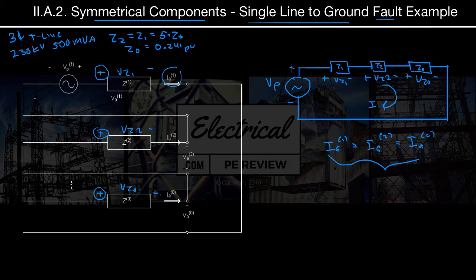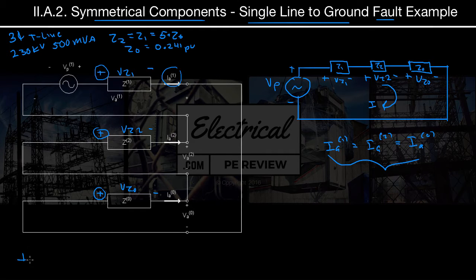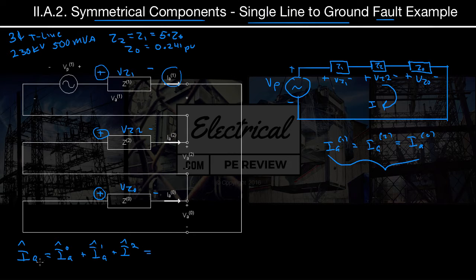We can also say that the phase current IA equals 3·IA1. Since IA is the sum of the three symmetrical components — IA0, IA1, and IA2 — and all three are equal, we can rewrite this as IA equals 3·IA1. We solve for IA1 first since it relates our phase voltage VP to Z1, the positive-sequence impedance.